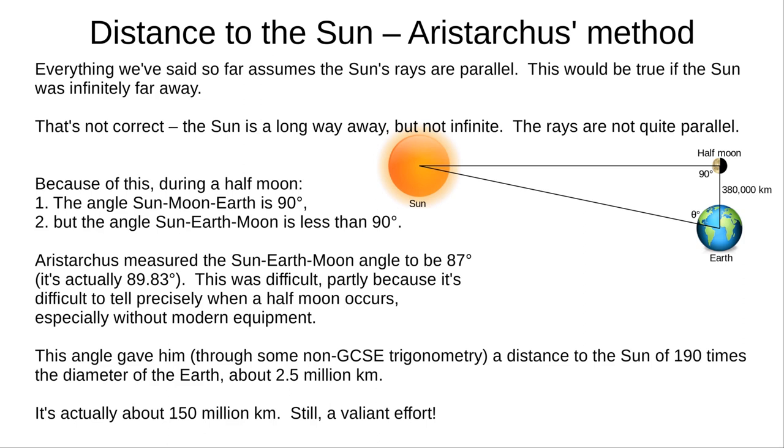Aristarchus estimated the Moon-Earth-Sun angle at half-moon. He did this by estimating the angle between the sun and the moon in the sky. The actual angle is 89.83 degrees. So very close to 90 degrees, that you need modern equipment to find the difference.